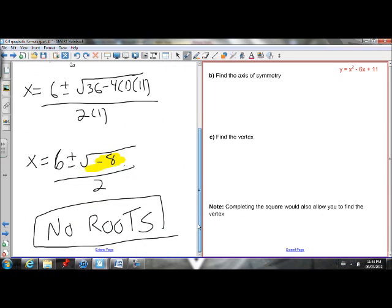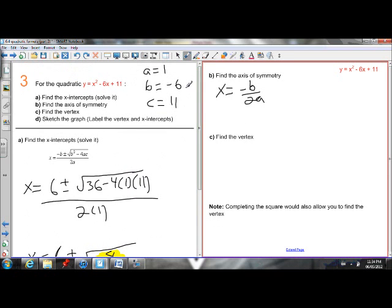So how do I graph this if it has no roots? Well, I'm going to have to find the vertex. So to find the vertex, I have to first find the x-coordinate, which is the axis of symmetry. And I know my formula for that is negative b over 2a.